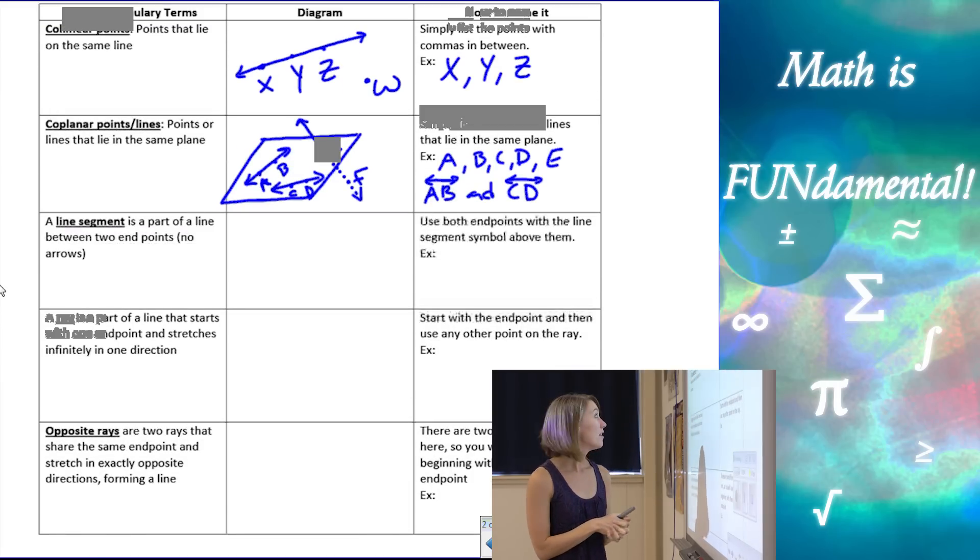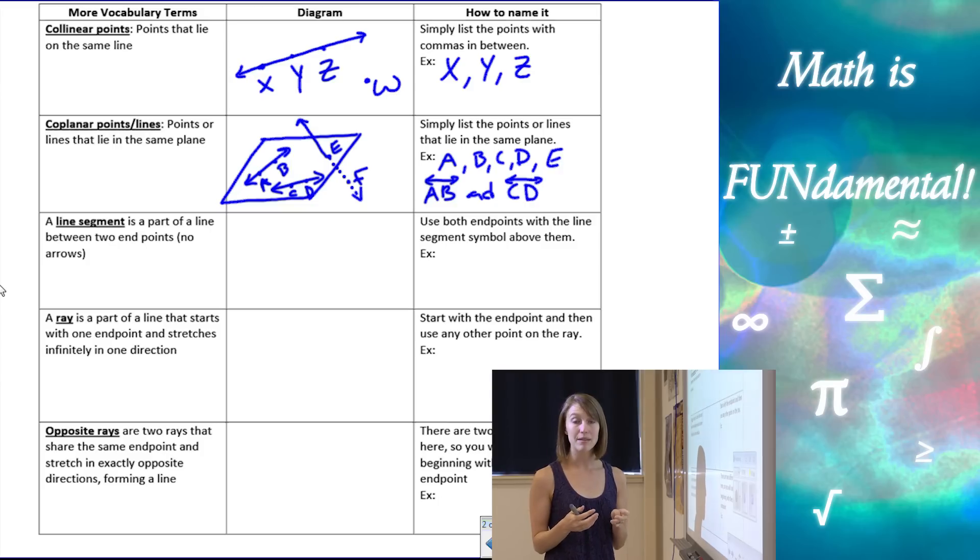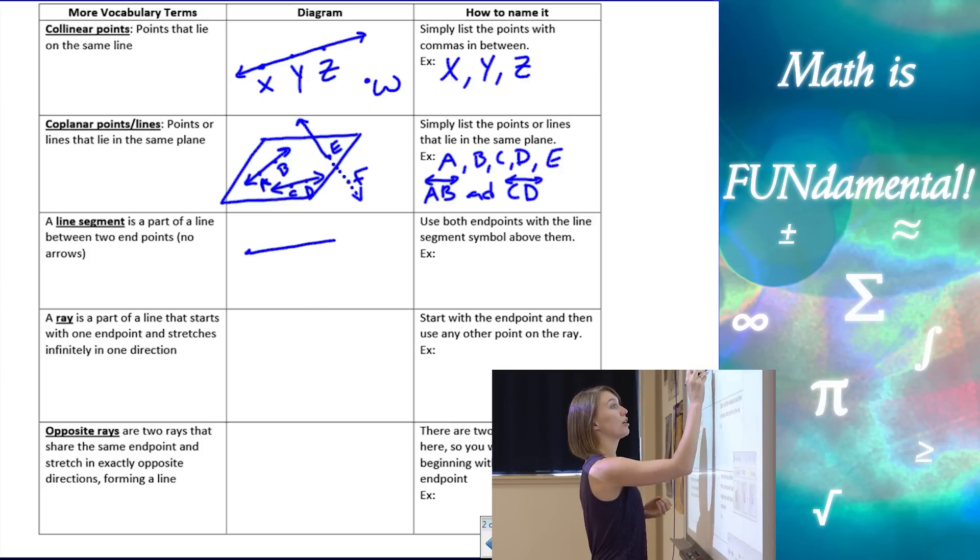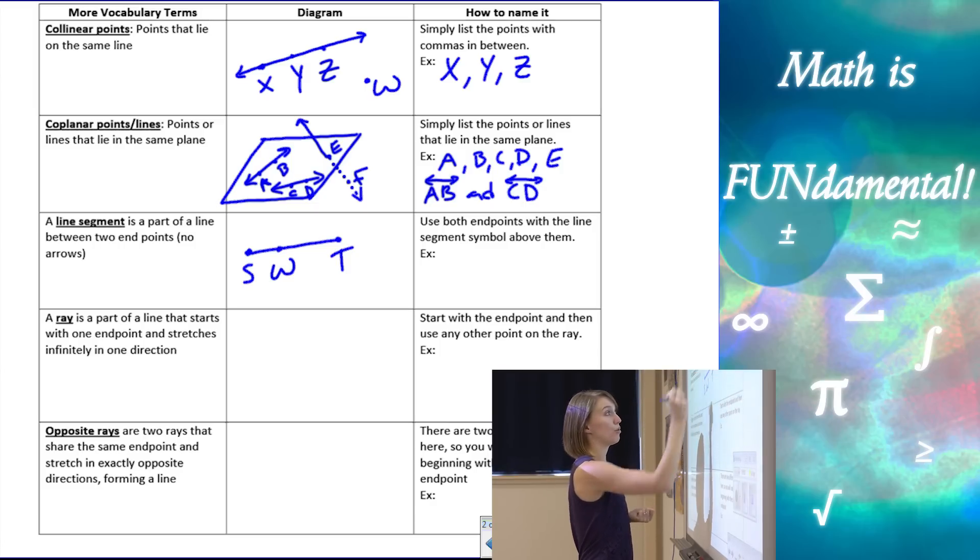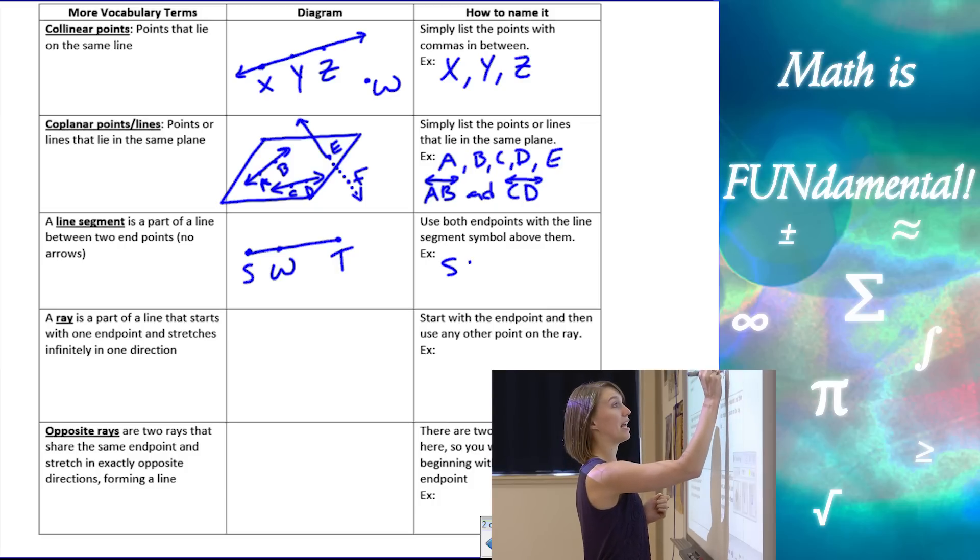Next term is a line segment. This is a little different than a line because it doesn't have any arrows. So a line segment is going to simply go between two end points. So if I have end points S and T, and I might have a point in the middle, it could be W, for example, we want to look at naming this segment with the two end points. So here I've actually created three different segments. I've created the segment ST, which is the length of that segment between S and T.